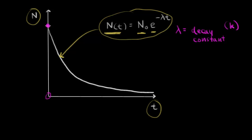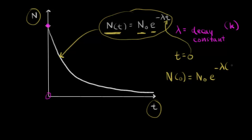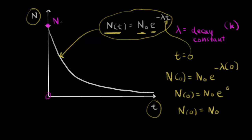That point is when time is equal to zero. Let's plug t = 0 into our equation. The number of radioactive nuclei when t = 0 is equal to N-naught times e to the negative lambda times zero, which equals N-naught times e to the zero. Since e to the zero is one, the number of radioactive nuclei at t = 0 is equal to N-naught. This point represents N-naught, the initial number of radioactive nuclei on our graph.